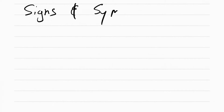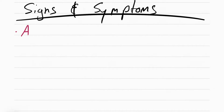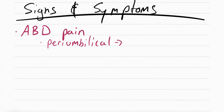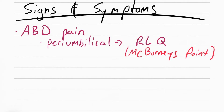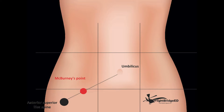The main sign and symptom that the patient presents with is going to be abdominal pain. It starts peri-umbilical, meaning around the umbilicus, and then it starts moving towards the right lower quadrant. The location where the pain is is also called McBurney's point, and it's exactly one third of the way from the anterior superior iliac spine to the umbilicus.